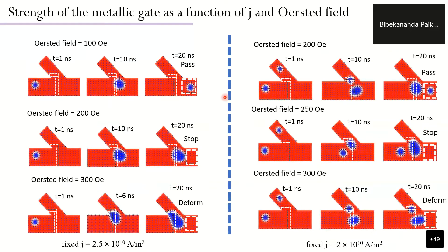To understand the strength of the metallic gate as a function of current density and Oersted field, one and two skyrmions were nucleated in the device. At a fixed current density, varying the Oersted field shows that at 100 Oe the field is insufficient to hold the skyrmion as the driving current dominates; at 200 Oe the field stops the skyrmion; and at 300 Oe the skyrmion begins to deform. With two skyrmions, at 200 Oe only one passes while the other is pinned; at 250 Oe both skyrmions are stopped; and at 300 Oe skyrmions start to deform.